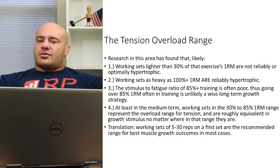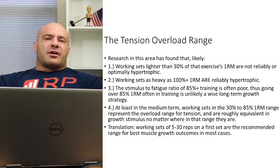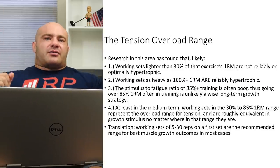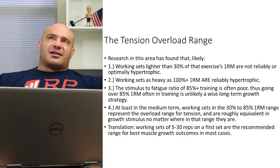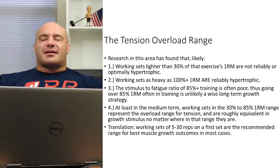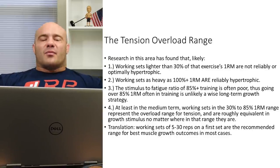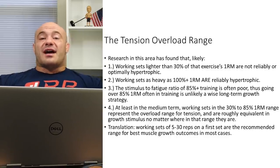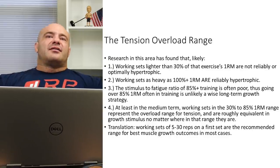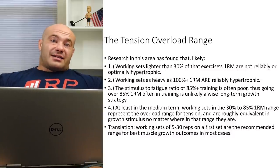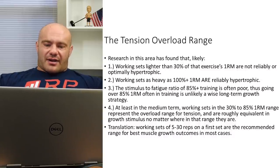So if you try lat pulldowns and you want to do a hypertrophic set, and you start to move the bar and can clearly tell it's going to be like a 50-rep set, just stop — count it as a warm-up and put more weight on the bar until you know it's going to be between 5 and 30 reps. That's the very simplest way to ensure you're going to at least get some muscle growth.